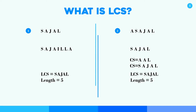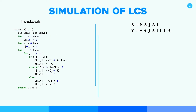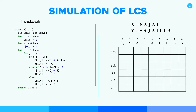We already understand what LCS is. Now we have to simulate the algorithm. We will use dynamic programming to implement this algorithm. Here is a pseudocode. Firstly we should take a two-dimensional array. We put the characters from X — our first string — and Y — our second string — with Y at columns and X at rows.